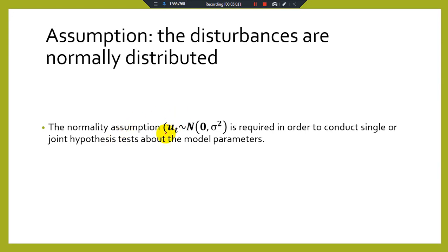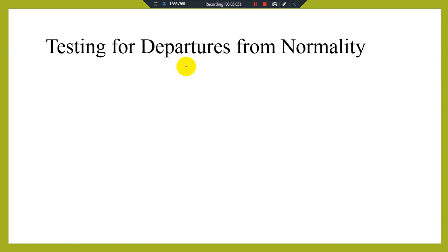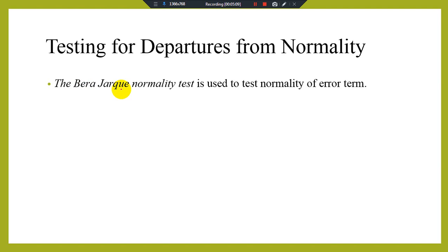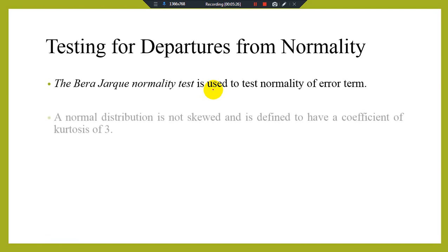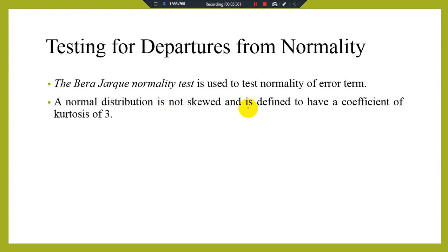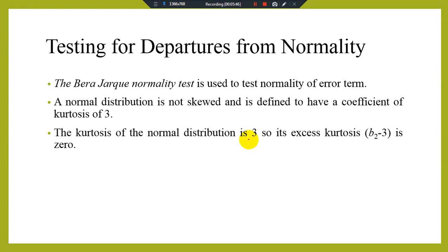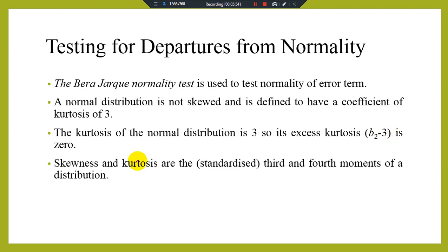Testing for departure from normality: the Bera-Jarque test — sometimes read as Jarque-Bera — following the Brooks textbook, we refer to it as Bera-Jarque. The Bera-Jarque statistic tests whether kurtosis beta-2 minus 3 is equal to zero. Skewness and kurtosis are the third and fourth moments of the distribution.